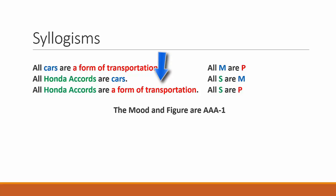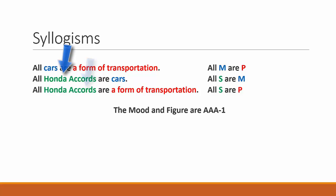The predicate term in the conclusion must appear in the first premise, the subject term of the conclusion must appear in the second premise, and the middle term appears just once in each premise.